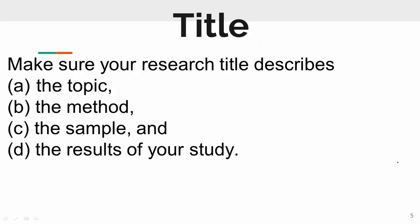There are some things that should be included in the title: it should describe the topic, it should describe the method used, it should describe the sample you have used, and it should describe the results of your study. If all four of these criteria are satisfied by your title, you can say that you have written a good research paper title.